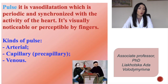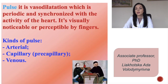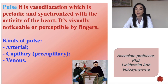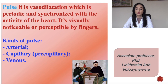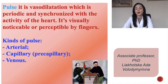So, what is the pulse? Pulse is a vasodilatation which is periodic and synchronized with the activity of the heart. It is visually noticeable or perceptible by fingers. The kinds of pulse are arterial, capillary, and venous.